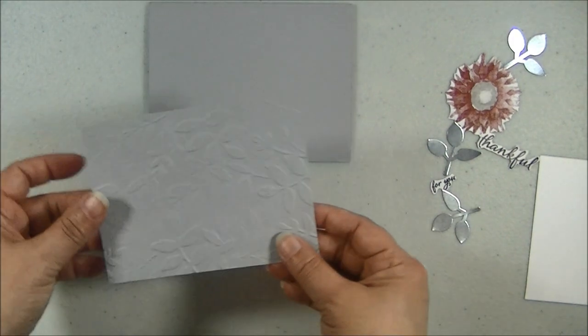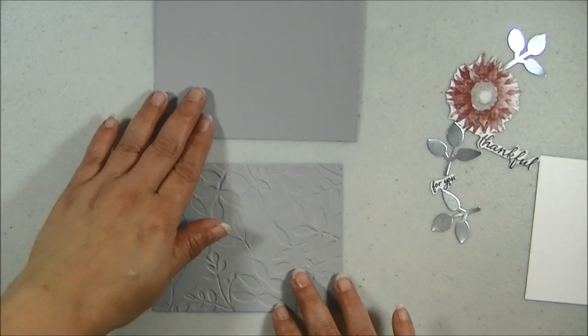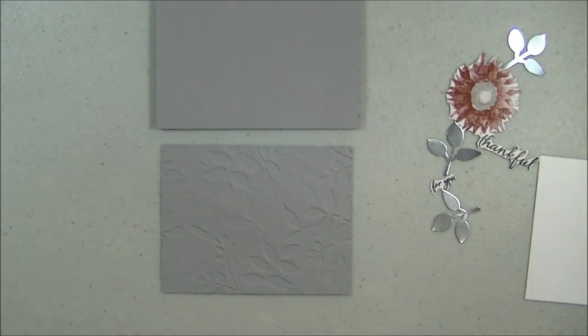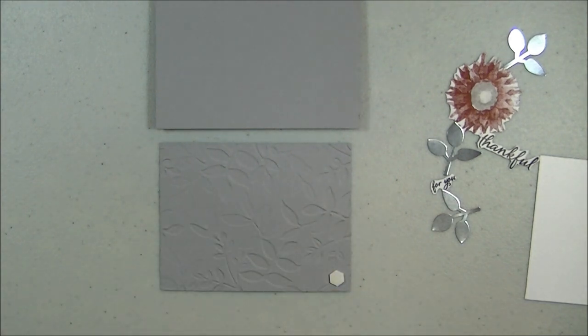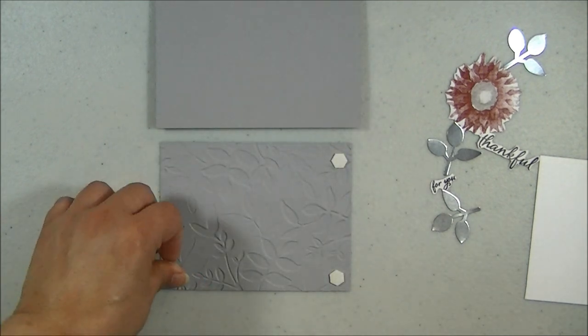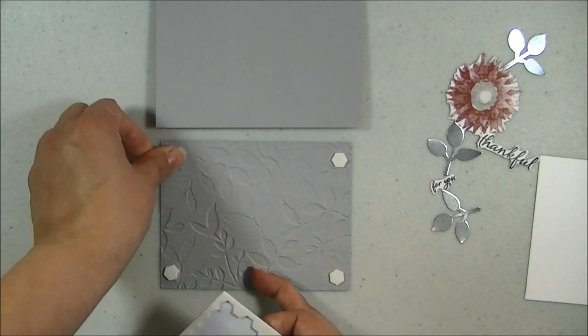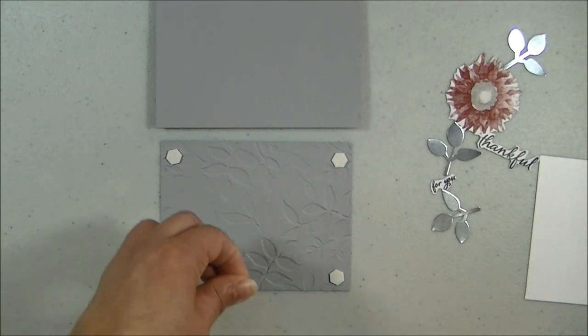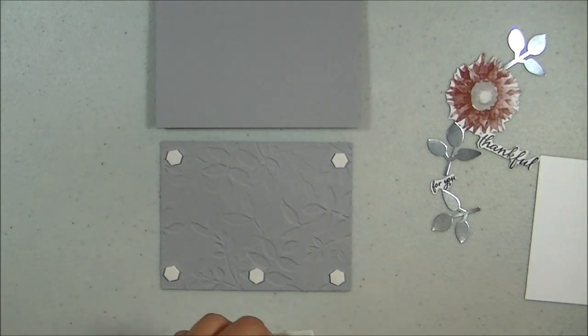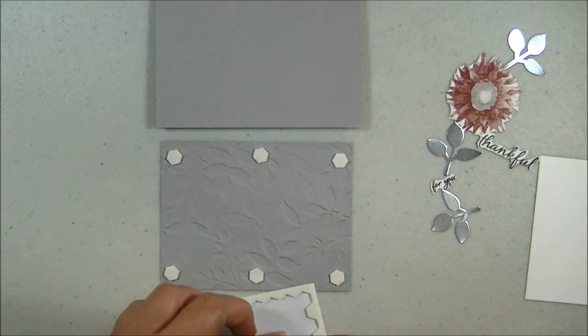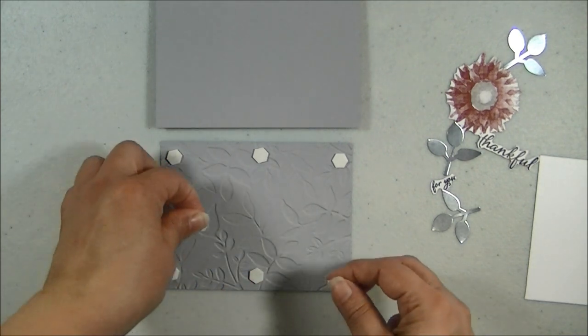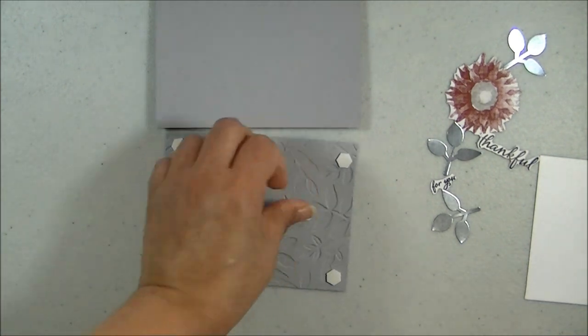And then here I am going to flip this over. With some Dimensionals, I am going to put some on the back of this because I want to pop up my layer. Here we are tone on tone. So I want to give it a little bit of dimension in between. That is good. If you have some foam tape, I ran out. I usually have some for popping up my panels. But I ran out. Stampin Up also has the little strips used for shaker cards. And I also ran out of those. Dimensionals it is because it works.